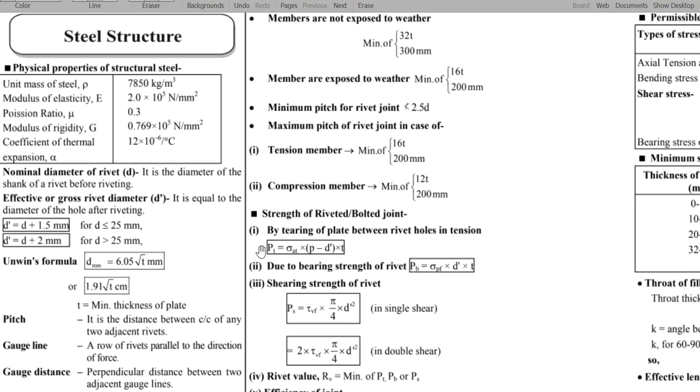First, the physical properties of structural steel. The steel or physical properties of the report is directly available. Like, what is the unit mass of the steel? Or you can say density of the steel. That is 7850 kg per meter cube. If you examine this value directly, that is 7850 kg per meter cube.